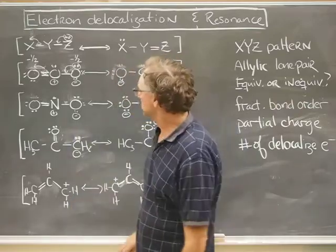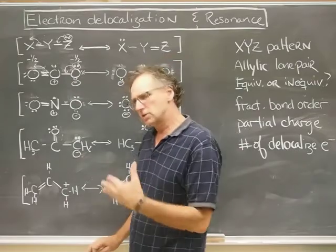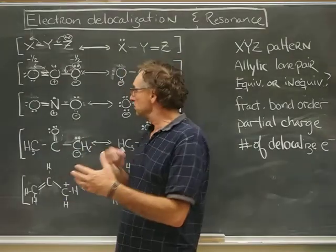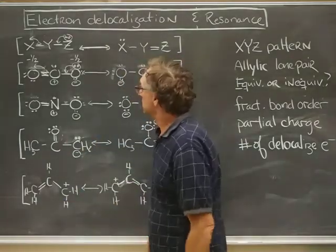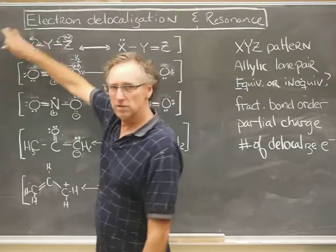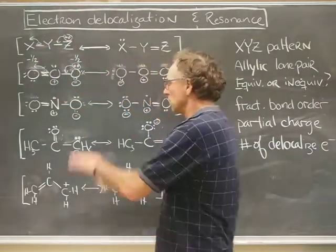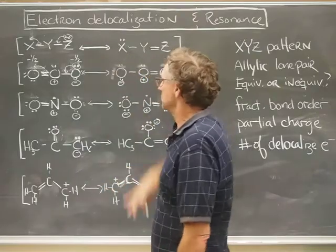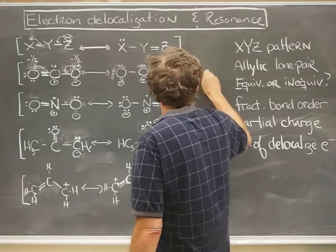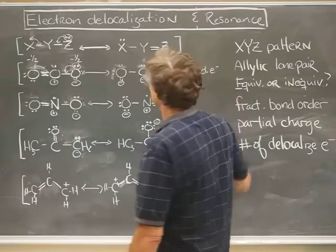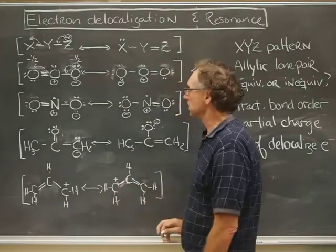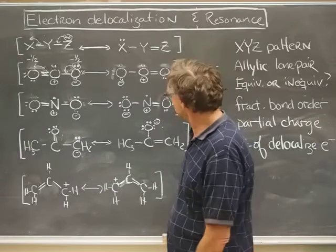One more thought here before I go on to the next example. It's useful to think about how many electrons are delocalized, that is how many are playing in this XYZ pattern. Well it's kind of obvious here that there's those two that did that and then the two that left. So we would say that the number of delocalized electrons in any XYZ pattern is two pairs, or there are four delocalized electrons that ozone has—four delocalized pi electrons.